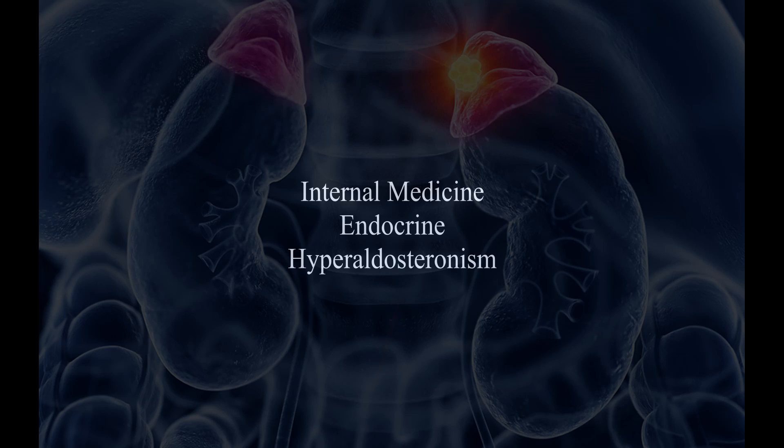At this point, you can usually see bilateral adrenal hyperplasia — around 60% of patients will end up having that. If CT is clean, you can do adrenal vein sampling to differentiate whether the patient has hyperplasia or an adenoma. If the patient has hyperplasia, you do medical therapy; if the patient has an adenoma, you want surgical excision.